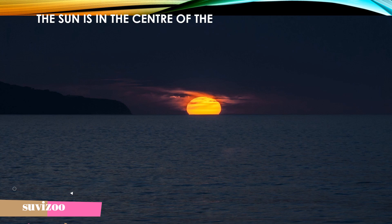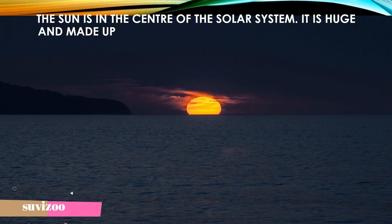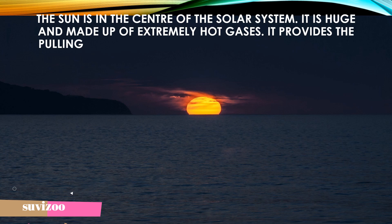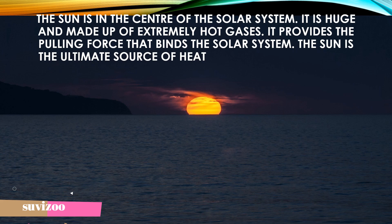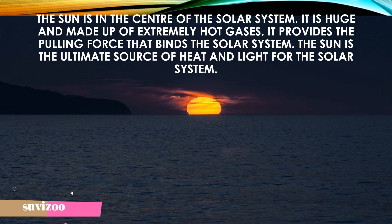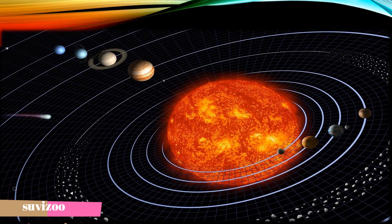The sun is at the center of the solar system. It is huge and made up of extremely hot gases. It provides the pulling force that binds the solar system. The sun is the ultimate source of heat and light for the solar system, and also the ultimate source of energy for us.